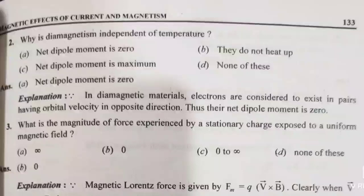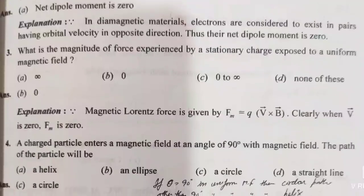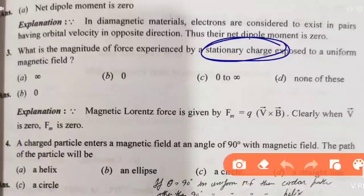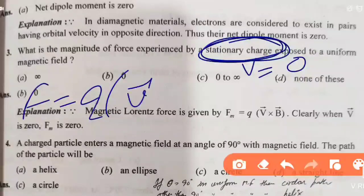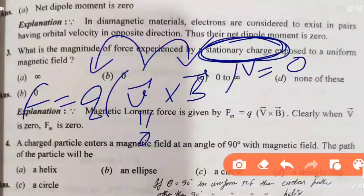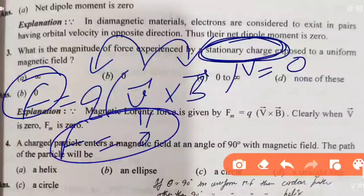Next question: what is the magnitude of force experienced by a stationary charge in a uniform magnetic field? A stationary charge means velocity is zero. Looking at the force formula F = Q(V × B), if velocity is zero, then Q multiplied by zero gives force equal to zero. So force is 0 — option B.